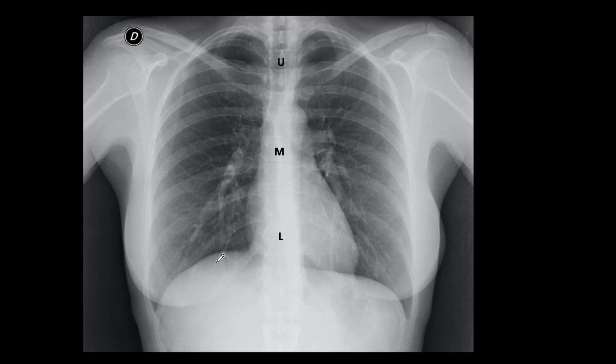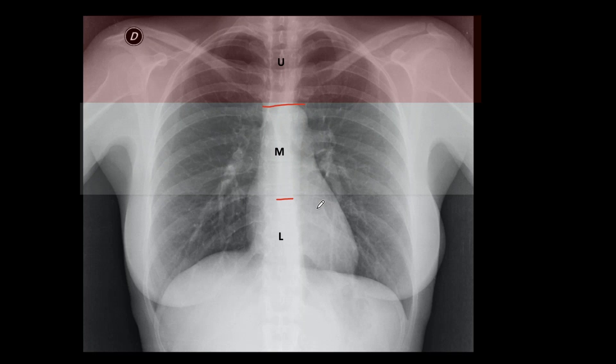Everybody has their particular checklist. I have one that has been working very well for me, which I have been sharing for the last years. I divide the PA chest into three areas, three zones: the upper, middle, and lower zone. The upper area starts at the top of the aortic knob. The middle covers about the middle third of the chest. Everything under this line is the lower area. That's how you separate the upper, middle, and lower areas.